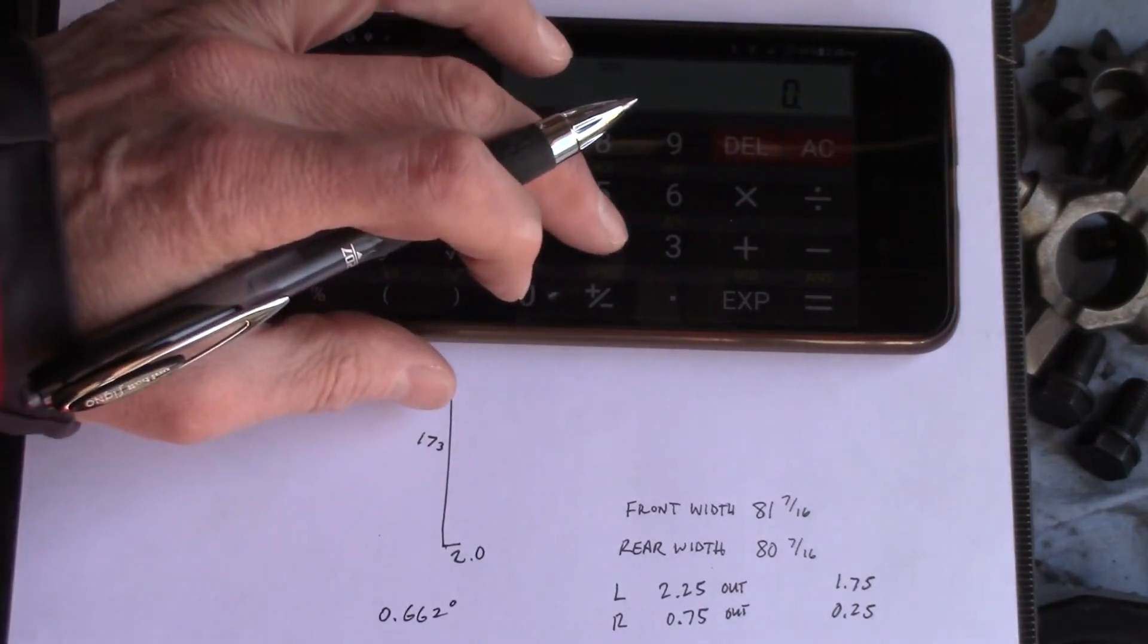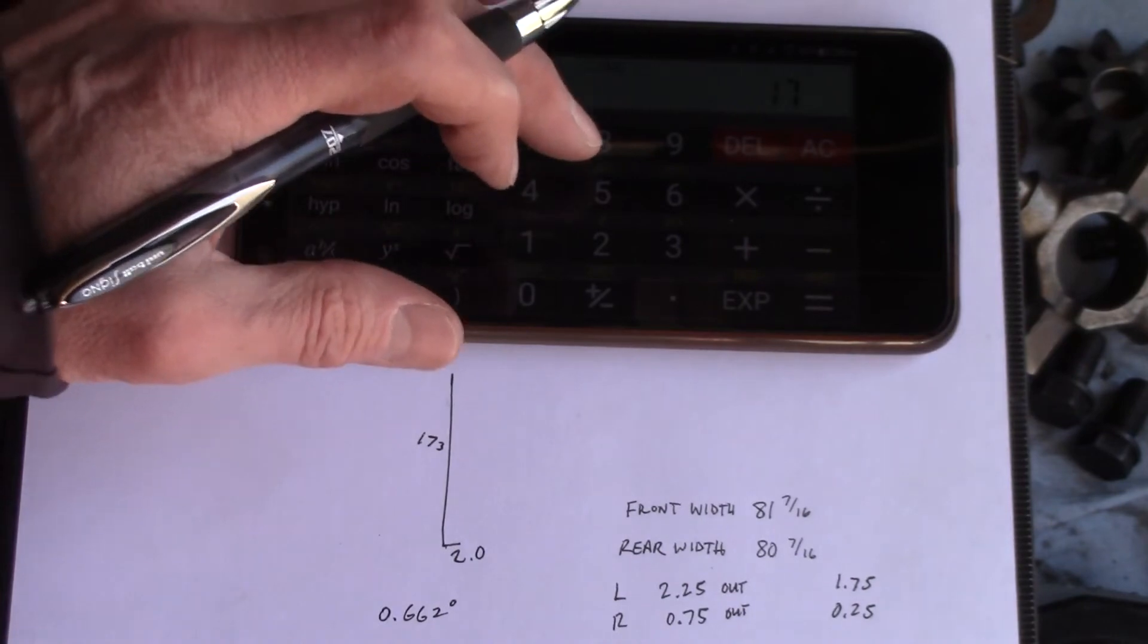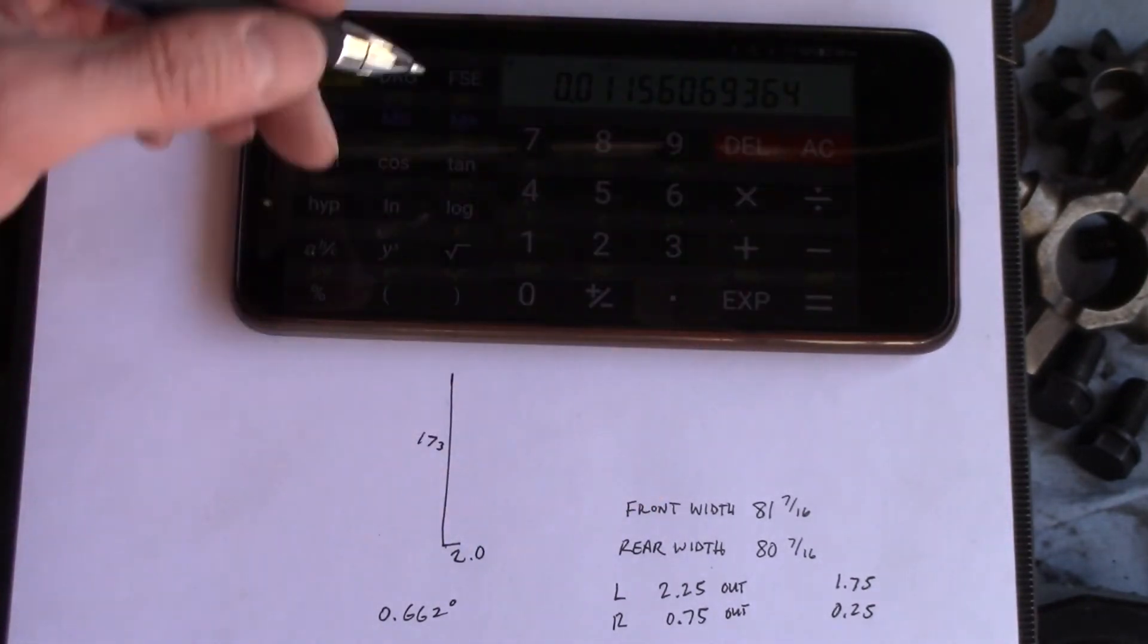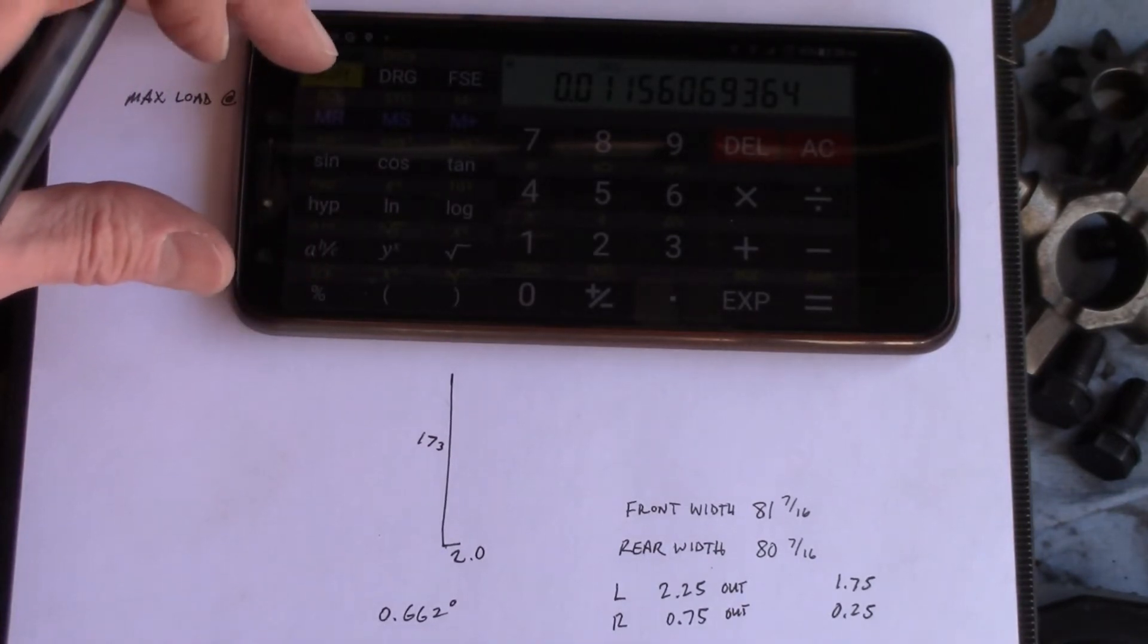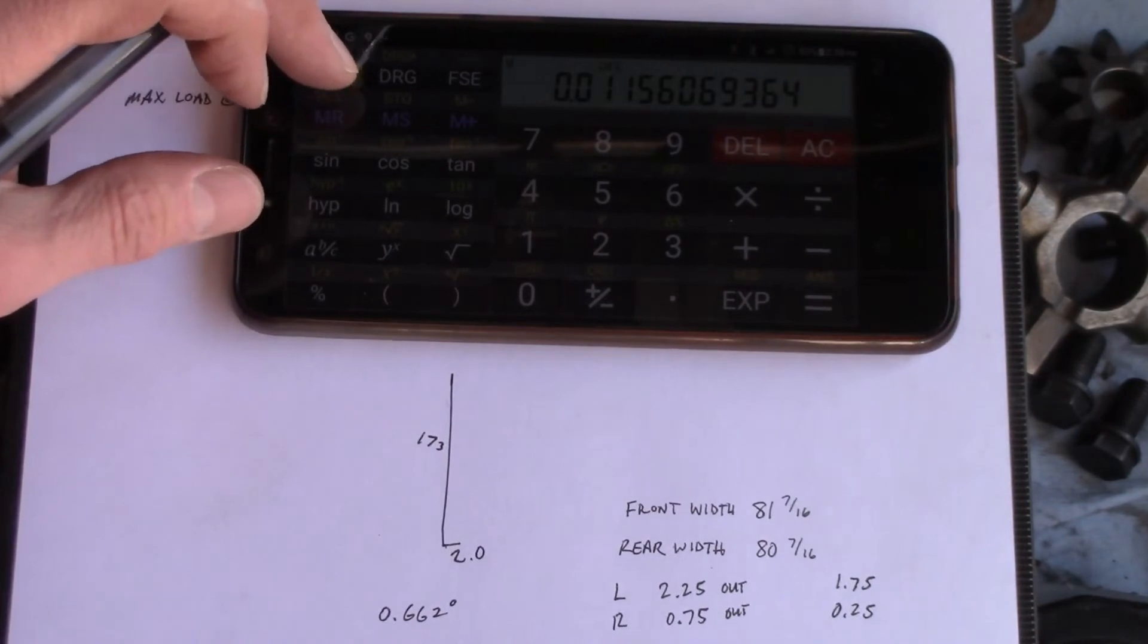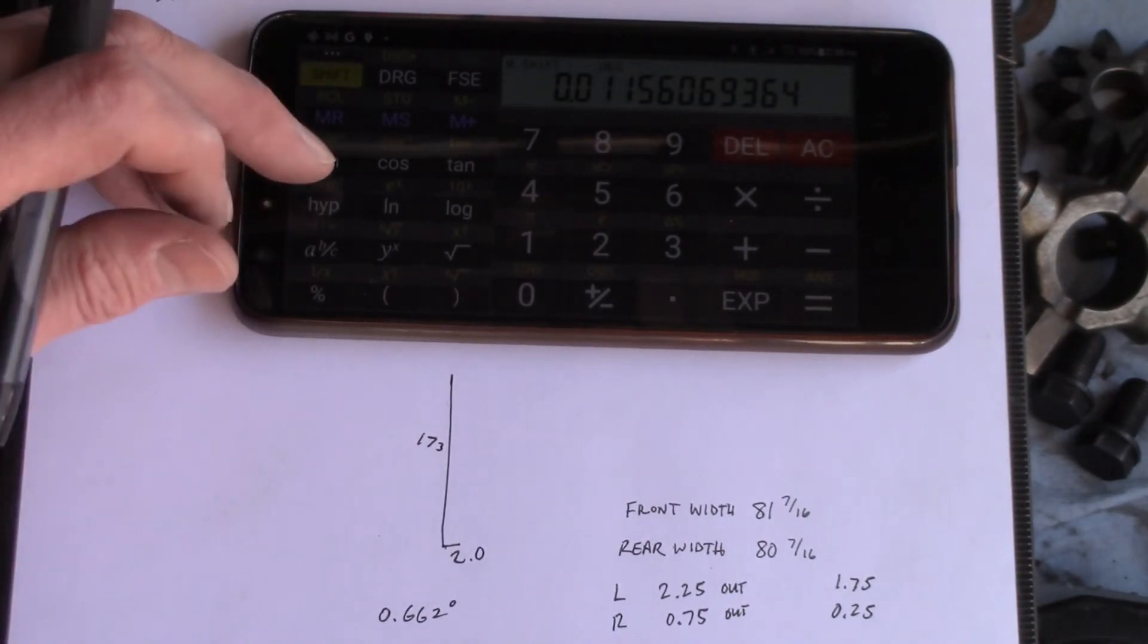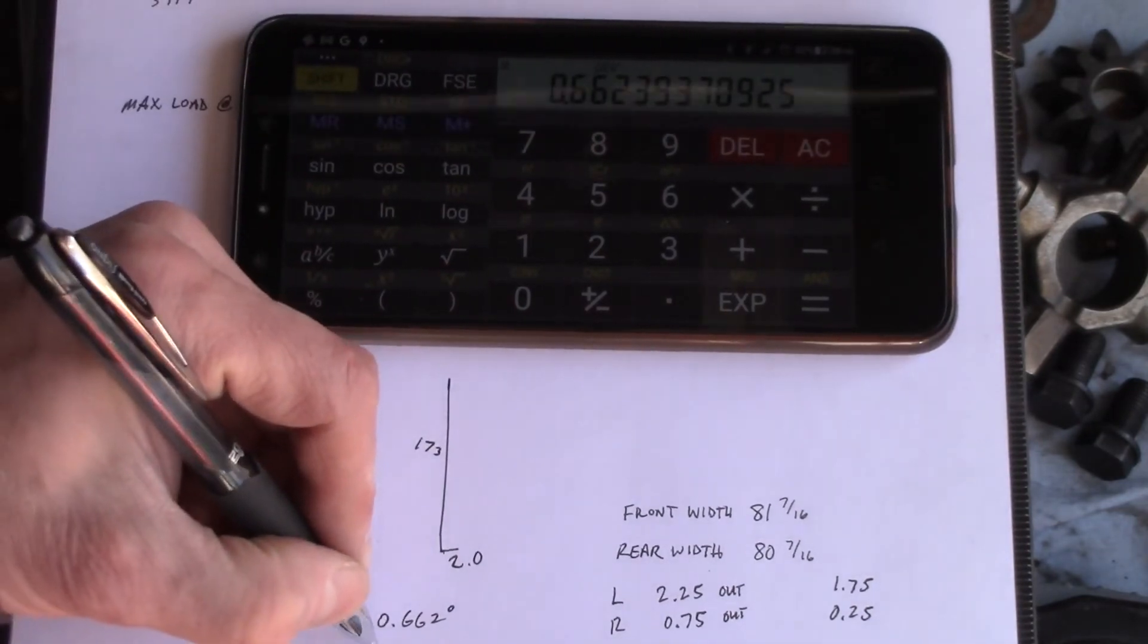Now let's do the same thing. We'll do 2 divided by 173 equals 0.015—that's the same as before when we did the division. Now we'll do the inverse sine of that and we get 0.662 degrees.